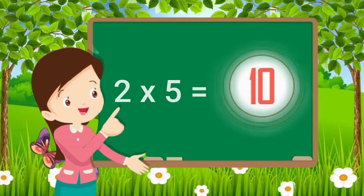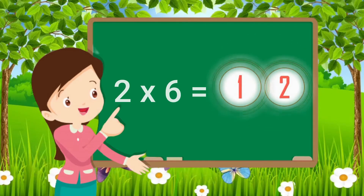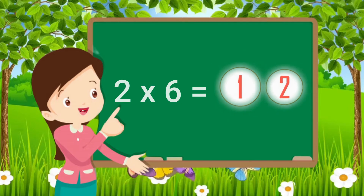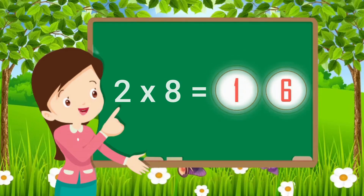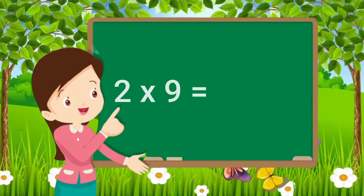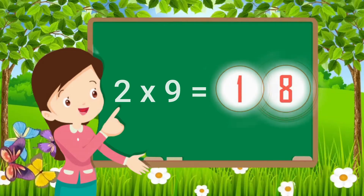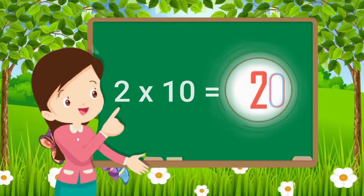Two fives are ten. Two sixes are twelve. Two sevens are fourteen. Two eights are sixteen. Two nines are eighteen. Two tens are twenty.